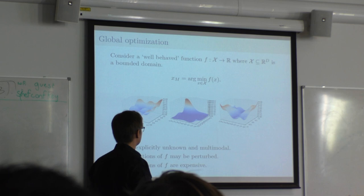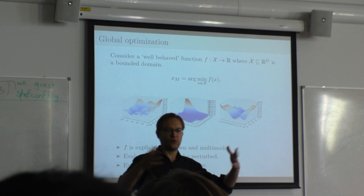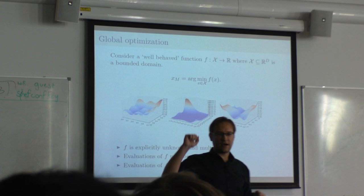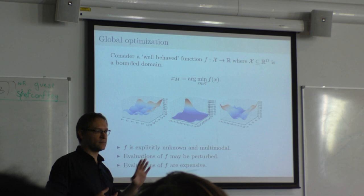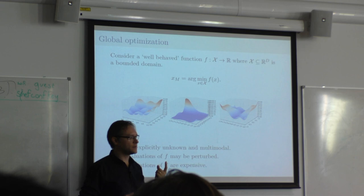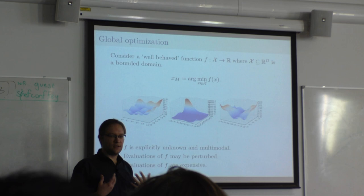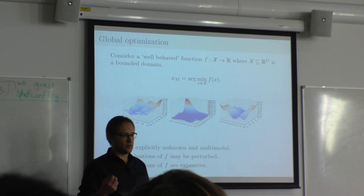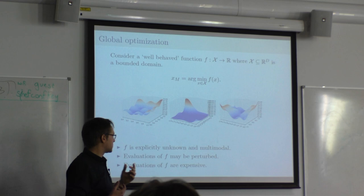The interesting conditions we impose on F represent the classes of problems I mentioned for automation in data science. First, F is explicitly unknown — we don't have the expression of F. The only thing we have is a mechanism for querying F at certain points in the domain. But evaluating F is going to be very expensive, so we have a limited budget and can only do it a few times.